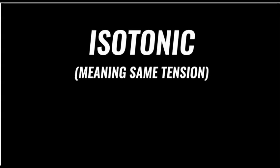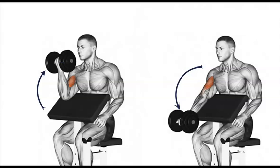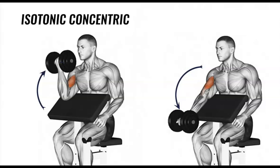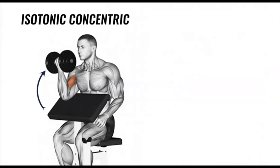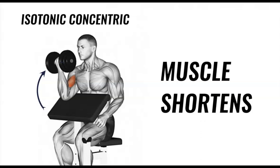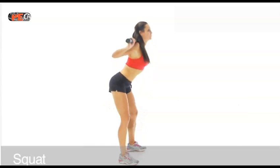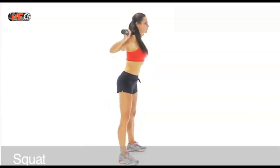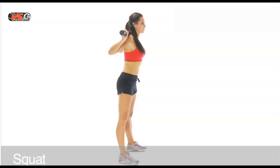Isotonic contractions occur when a muscle changes length whilst contracting. There are two types of isotonic contractions: isotonic concentric and isotonic eccentric. Isotonic concentric contractions occur when a muscle shortens under tension. An example of this would be during the upwards phase of the squat. The quadriceps muscle group, working as the agonist, contract and shorten under tension, causing extension at the knee.